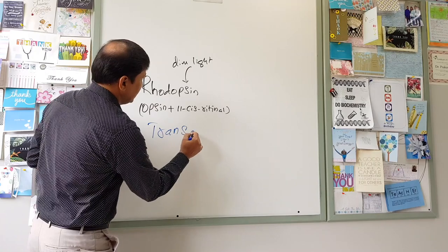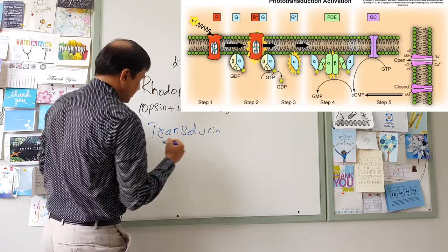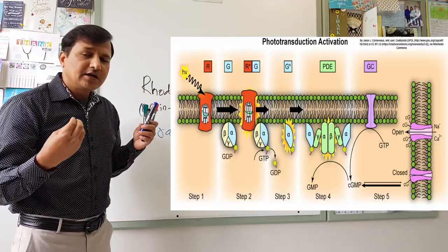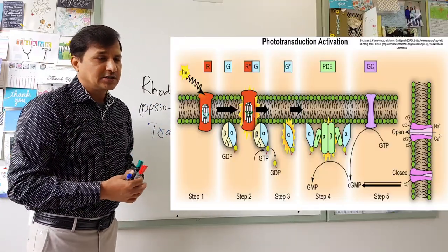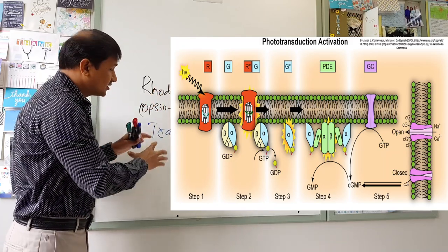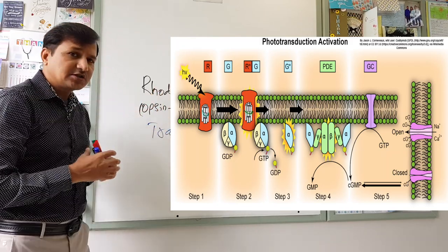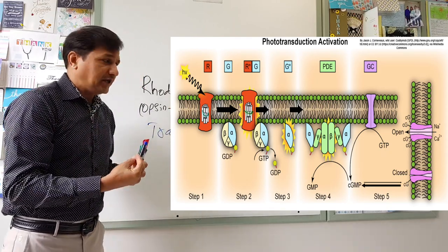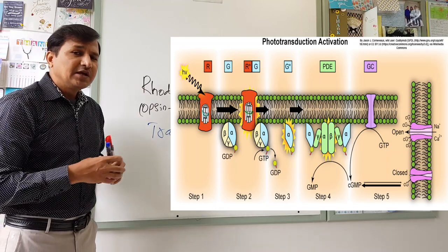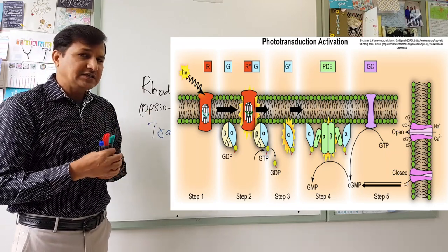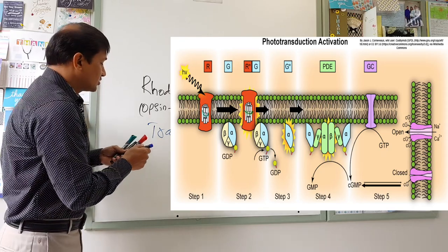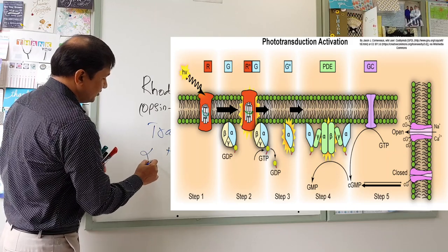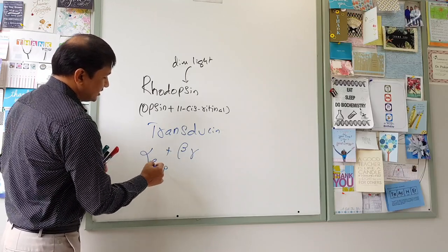Transducin is a G protein-coupled molecule — a G protein with alpha, beta, and gamma subunits. Whenever rhodopsin undergoes photodegradation, there will be changes in the conformation of transducin where GDP is replaced by GTP. As shown in the figure, GDP is taken out and GTP is put in. During this process, the beta and gamma subunits separate from the alpha subunit, which is now associated with GTP.